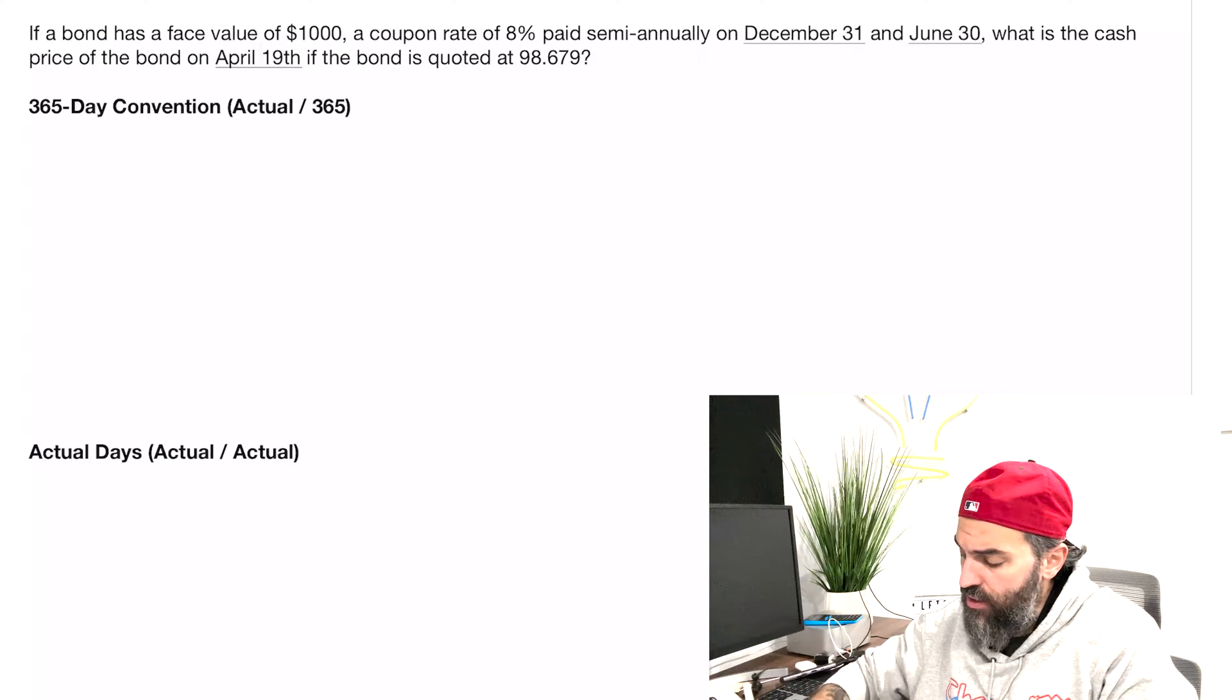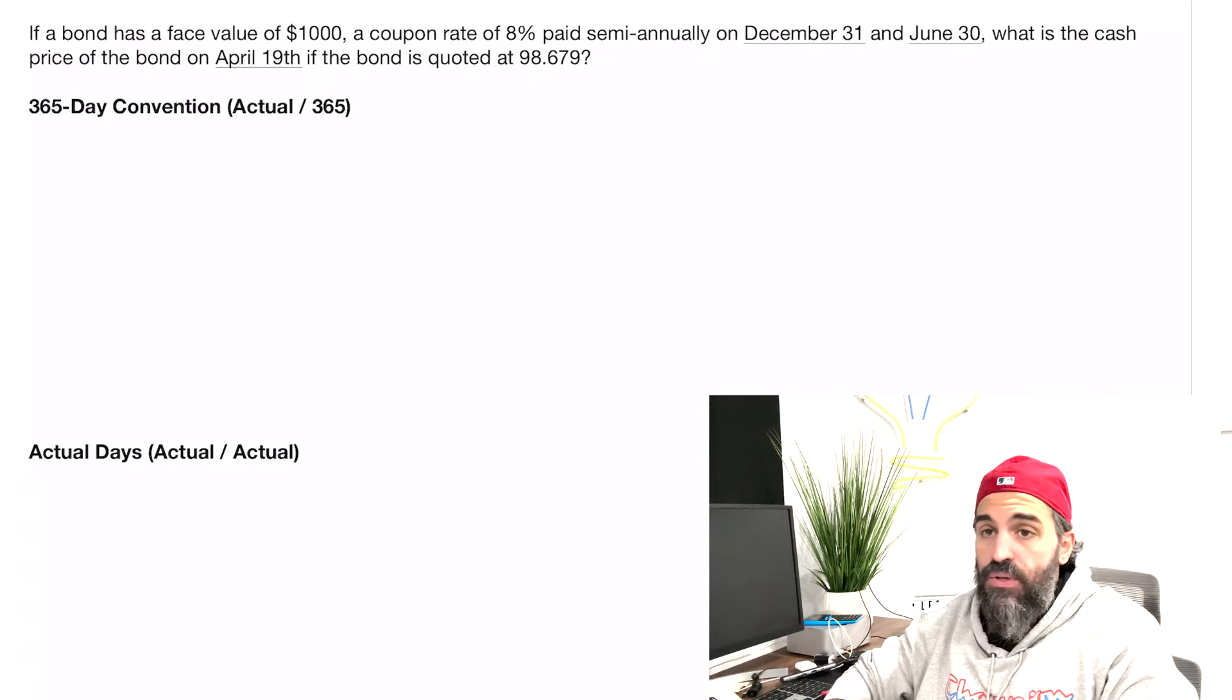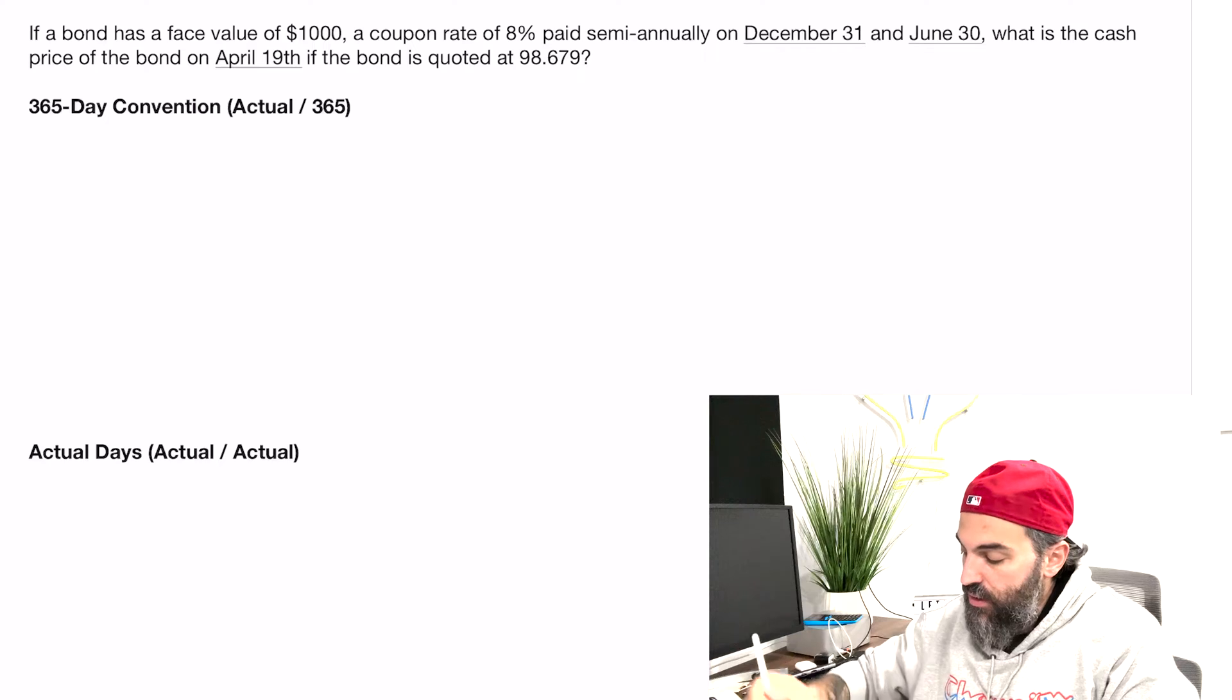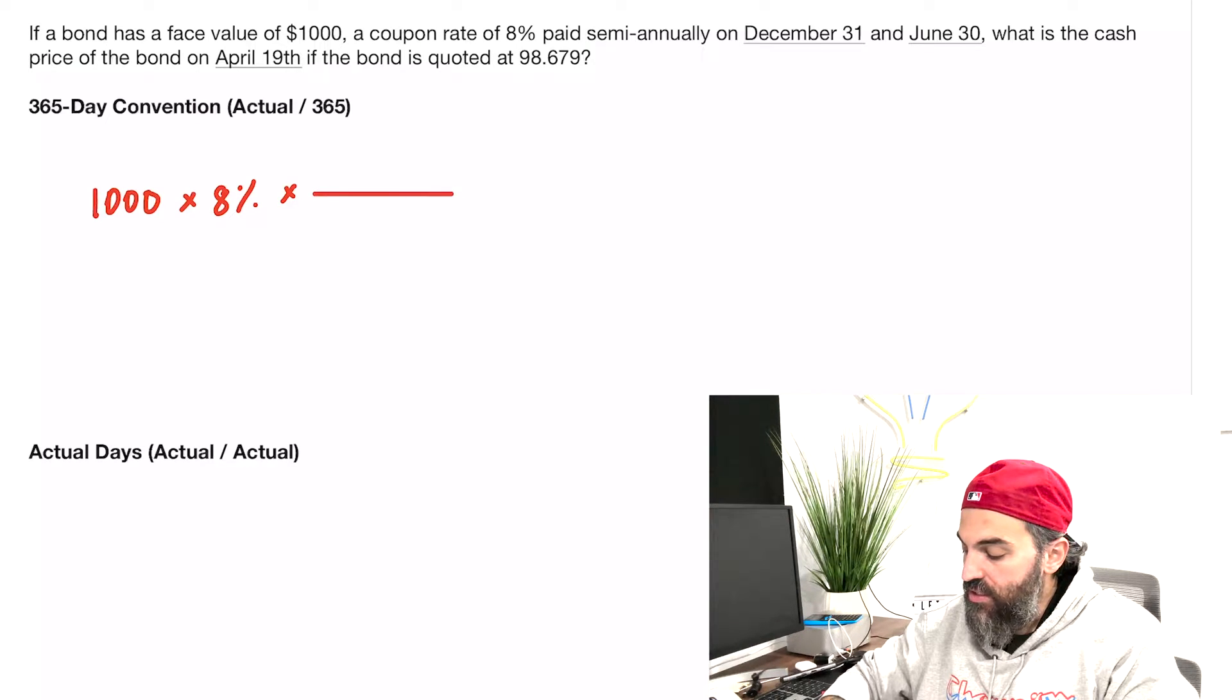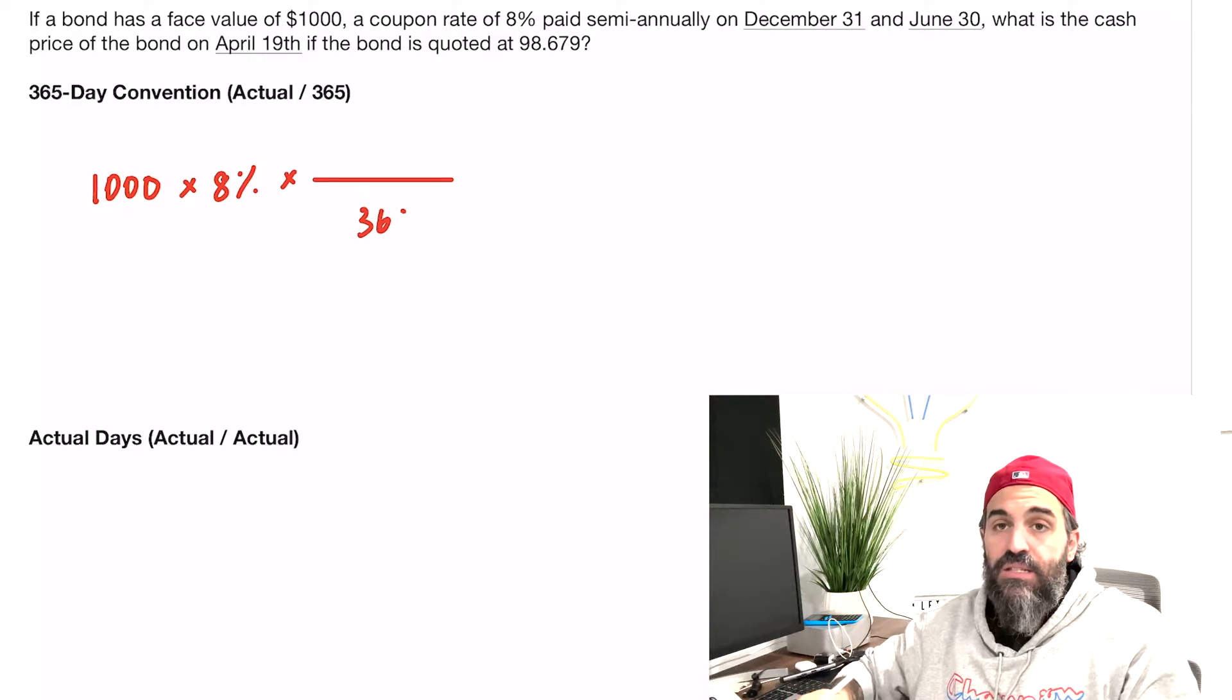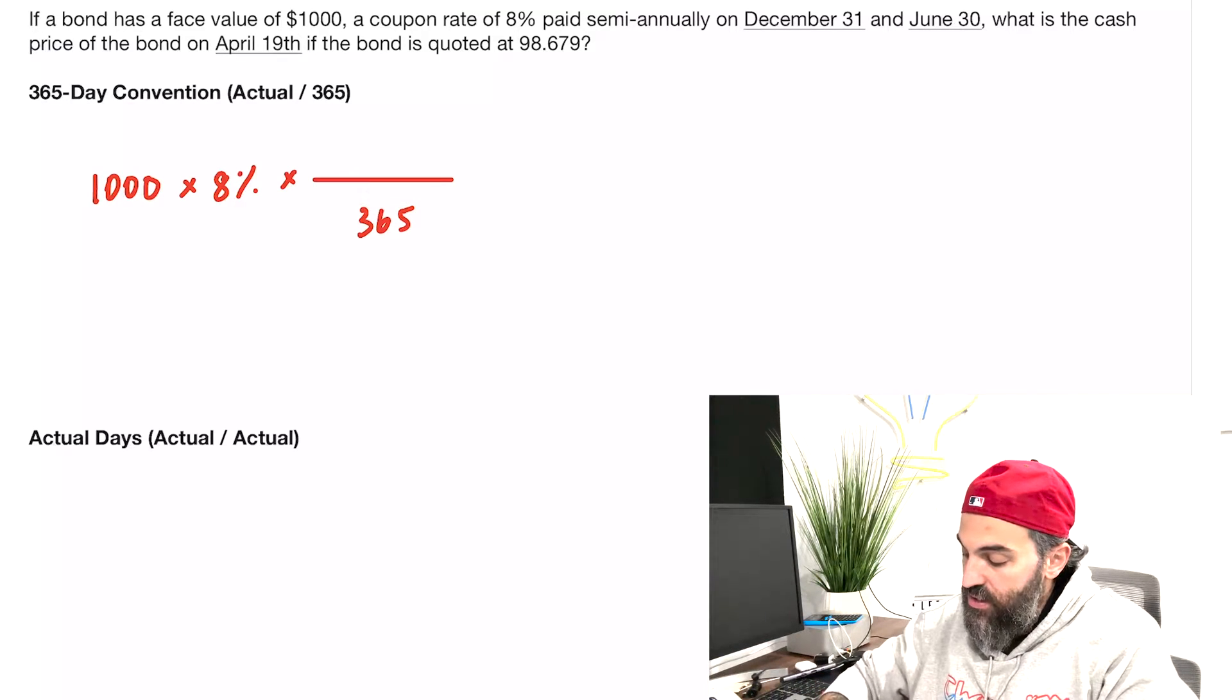If you're going to use the 365-day convention, you want to take the face value of the bond multiplied by the coupon rate—in this case 8%—multiplied by actual over 365. Actual means the actual number of days since the previous payment.